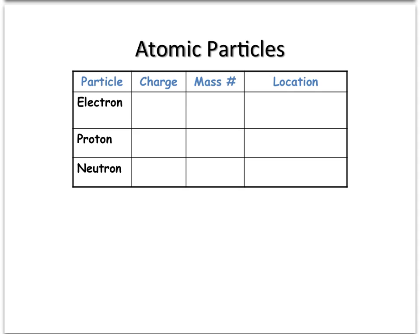So protons and neutrons are very massive compared to an electron. They both have a mass number of 1, or 1 AMU, and the electron has a mass number of 0 because its mass is negligible in comparison to the proton and neutron.